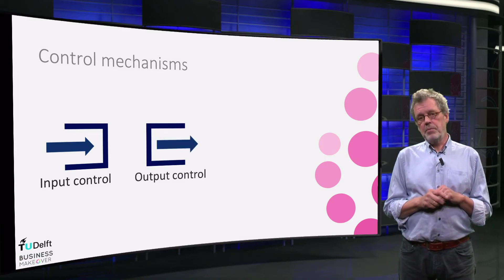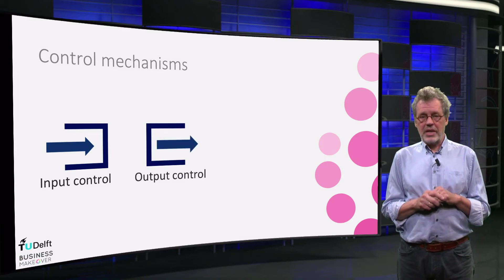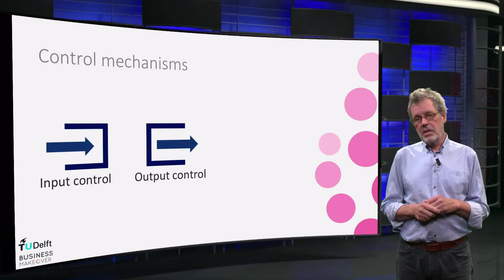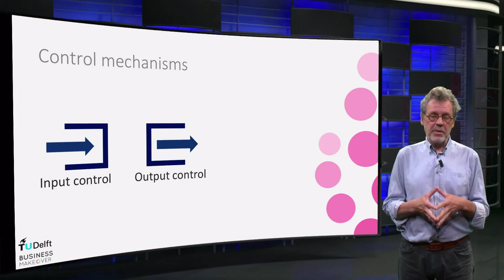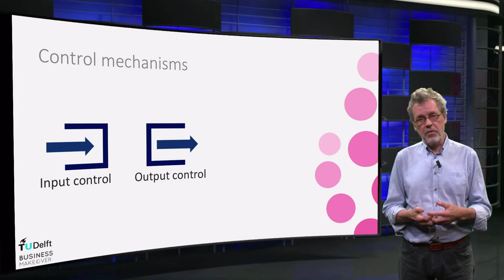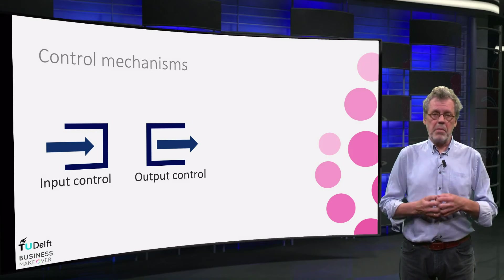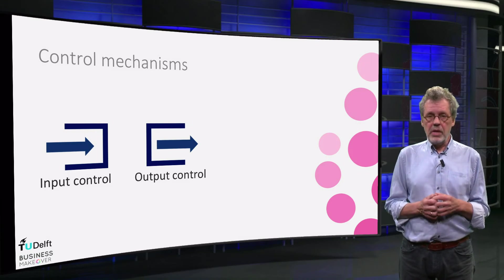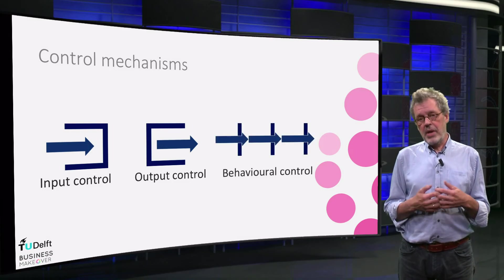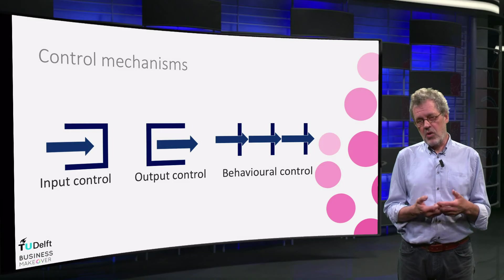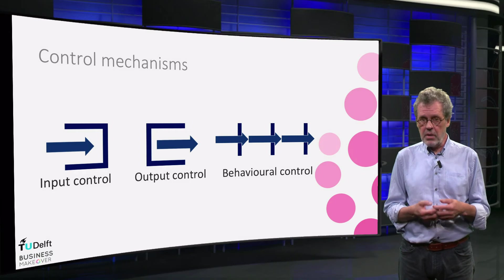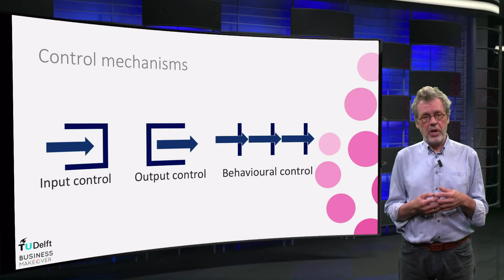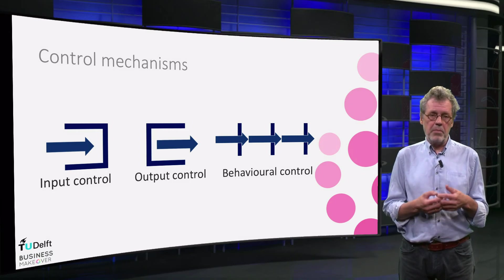With output control, clear targets are set that have to be met by your partners. This happens most of the time when you have to meet and safeguard customer expectations and relations. At discussed intervals you monitor if the targets are met — this can be monthly, on a quarterly basis or a yearly basis. Finally, behaviour control implies that you are continuously monitoring the behaviour of your partner, almost real-time, and you provide immediate feedback if operational interdependence plays an important role.